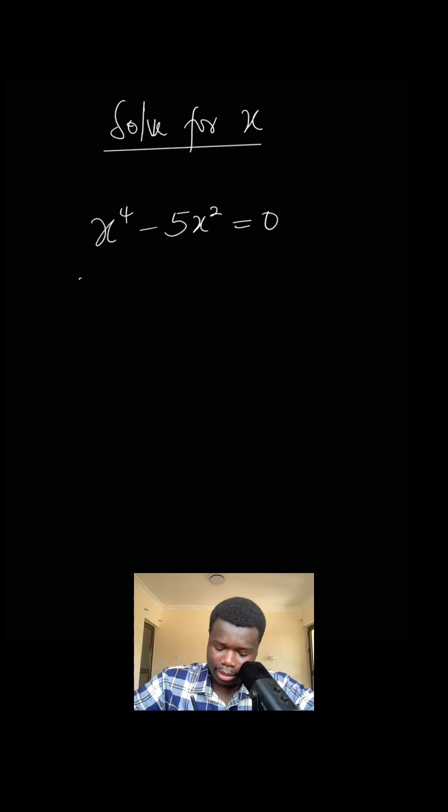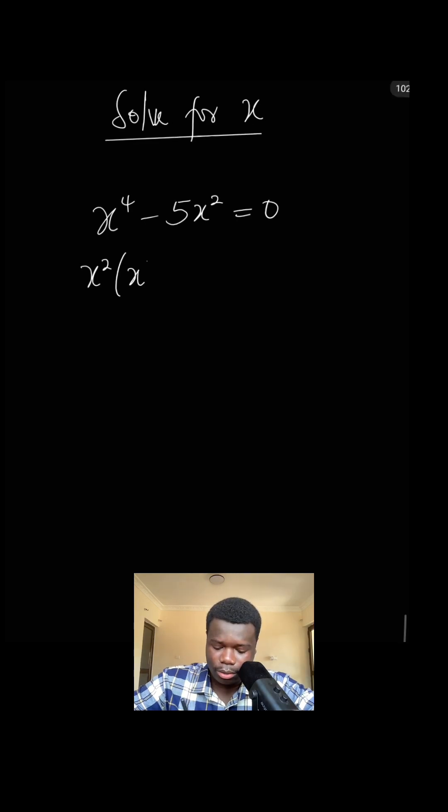So what we have to do is to factorize. We can factorize this by factorizing x^2 out, then we have x^2(x^2 - 5) = 0.